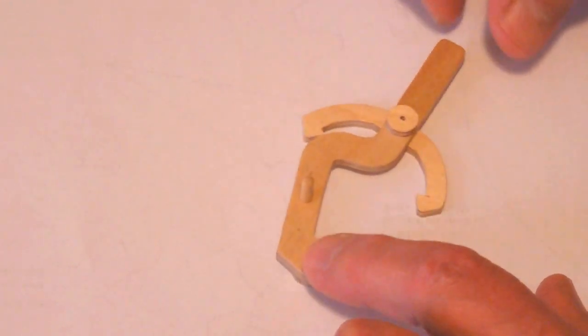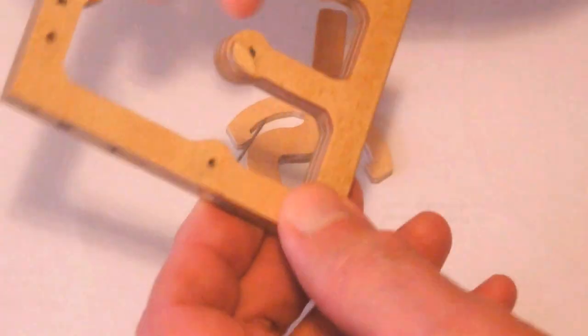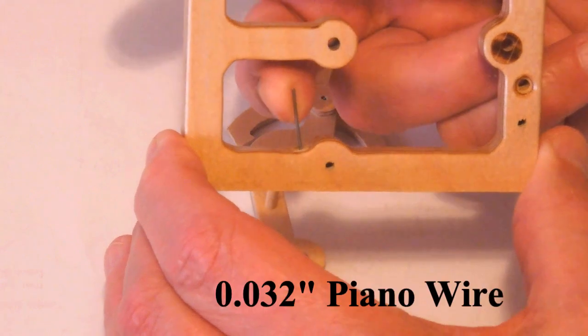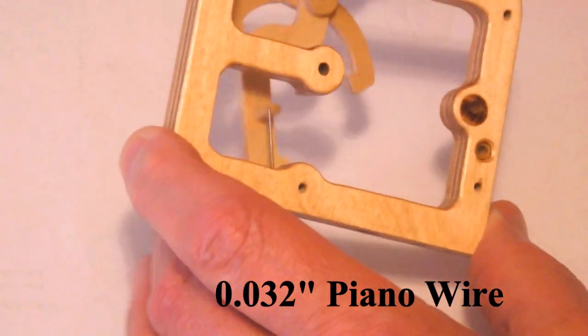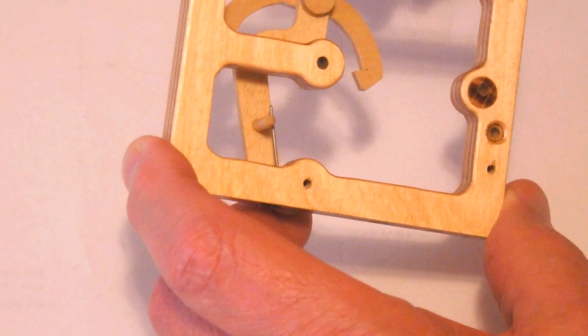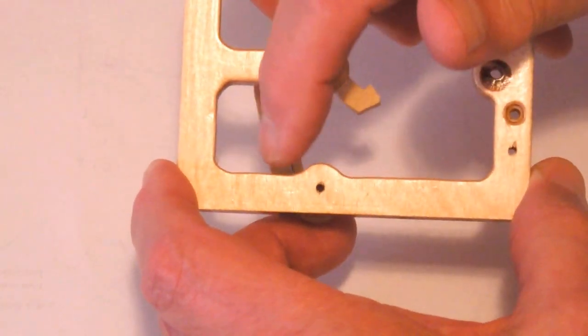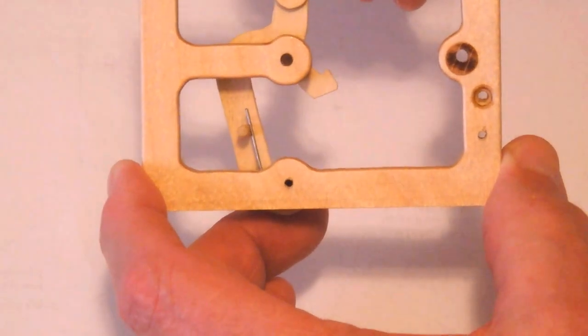I wanted this lever to return to center on increment. I added a piano wire down here. It works against this 1⁄8 inch dowel that I added to the advanced lever here, and that returns it to center after each increment.